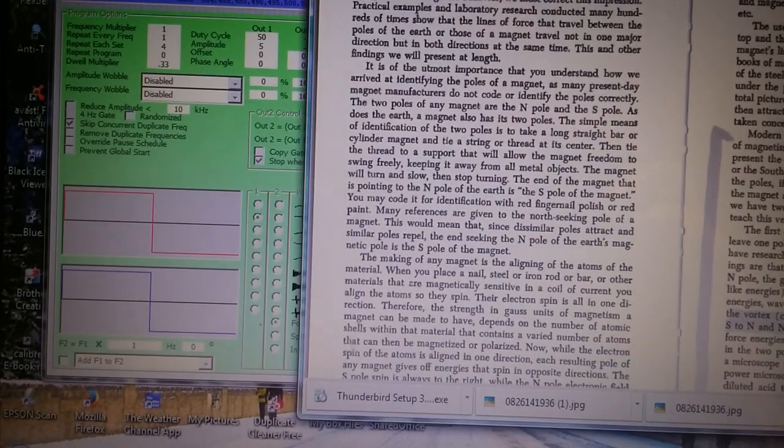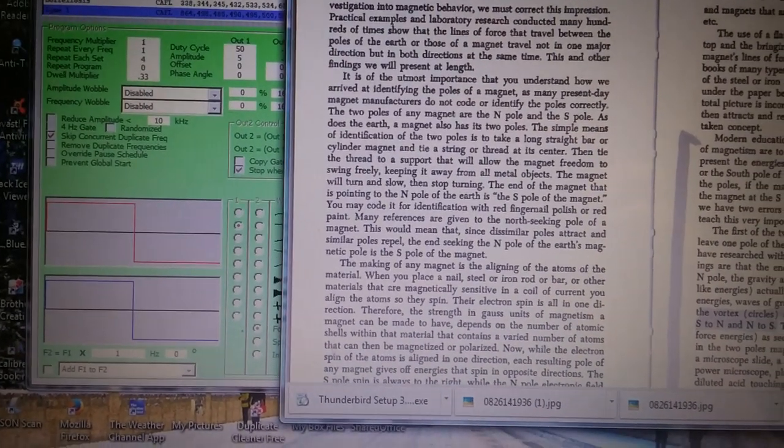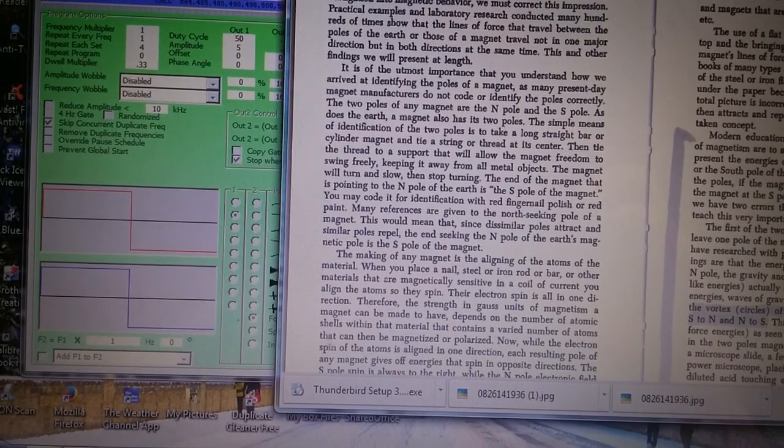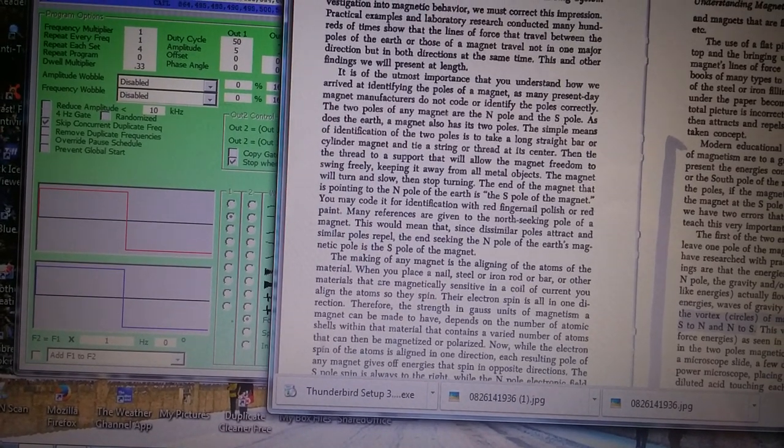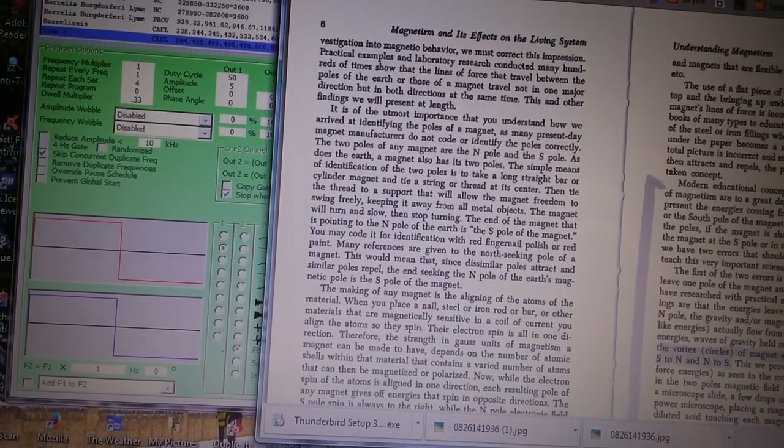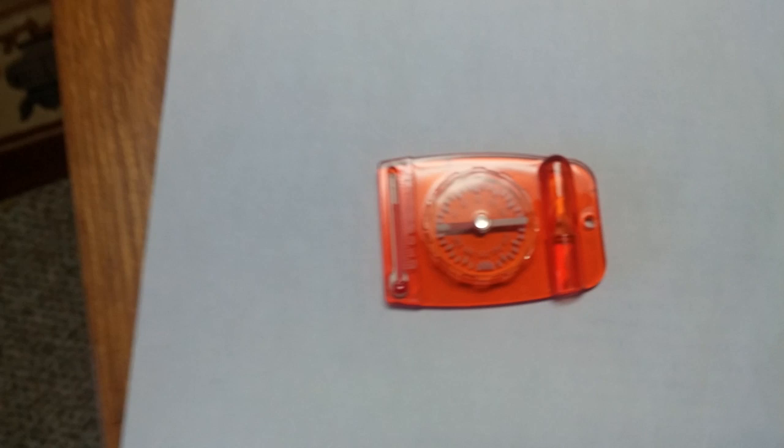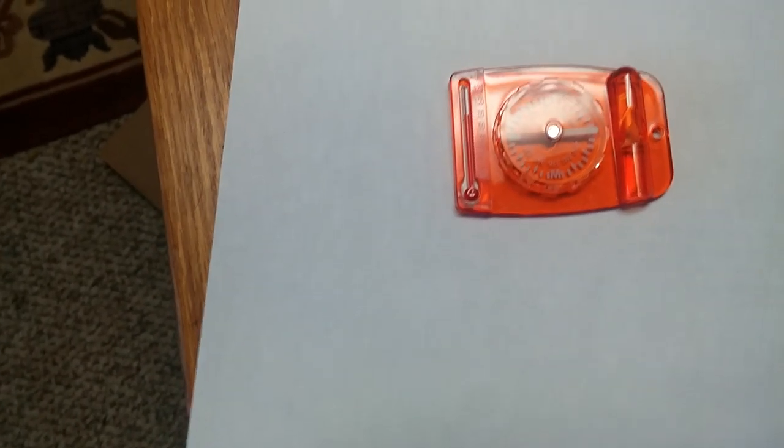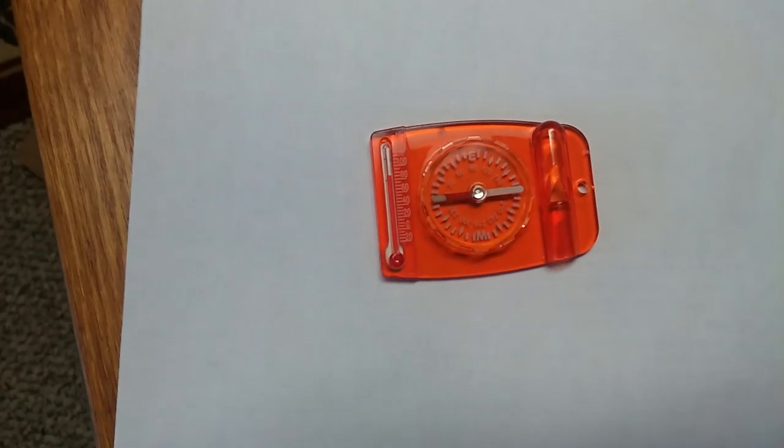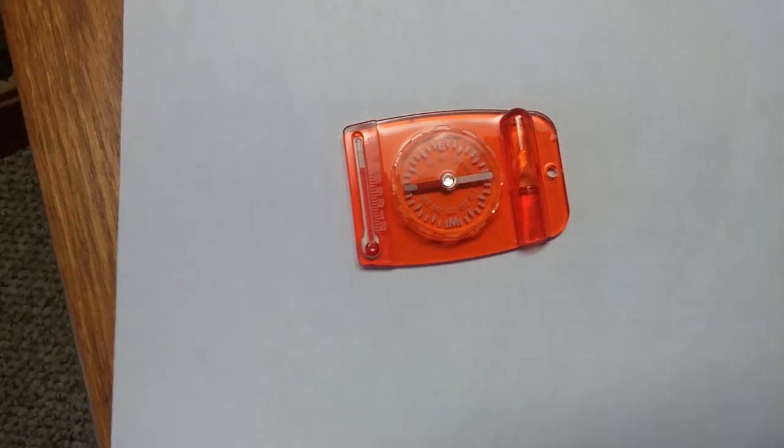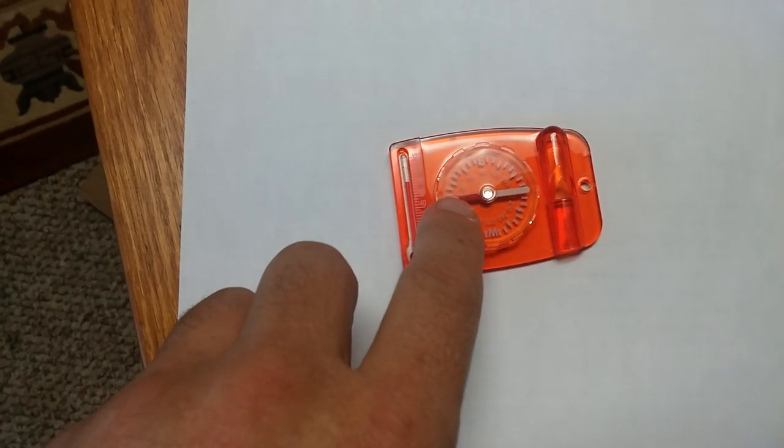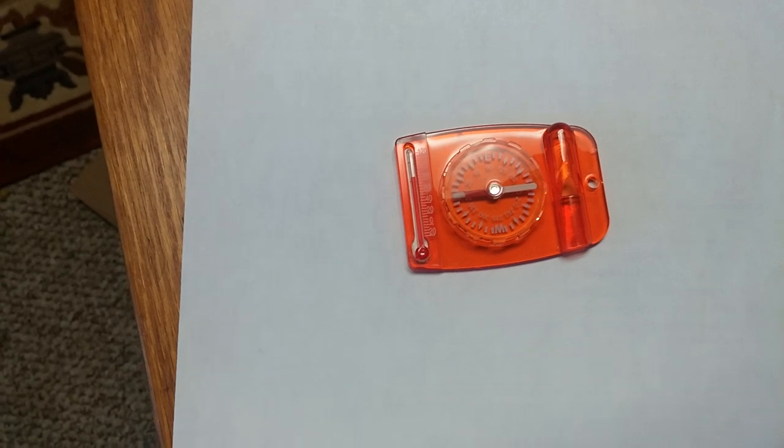So if that's true, the North Pole of the earth is what we're looking for. That would mean that the red part of the magnet is seeking the North Pole of the magnet.